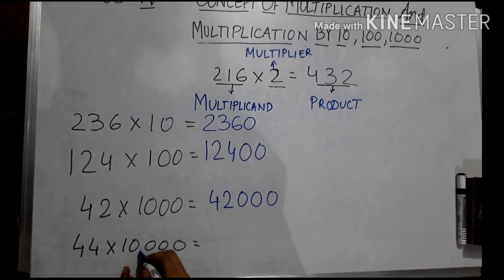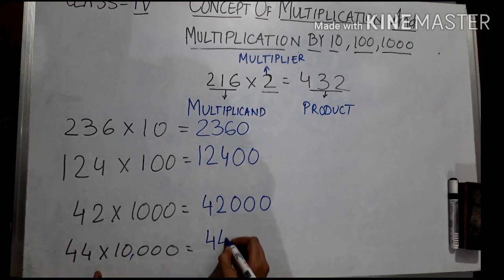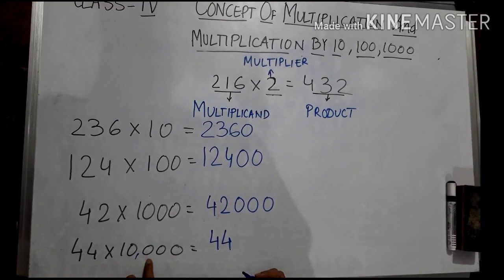44 into 10,000. So 44, how many zeros are there? 1, 2, 3, 4.